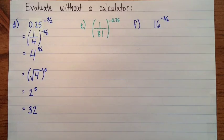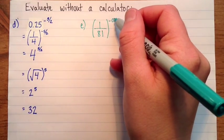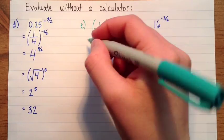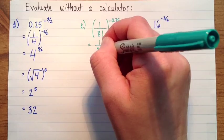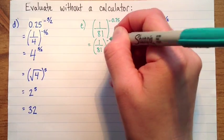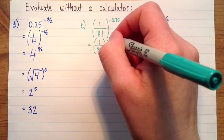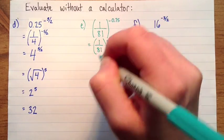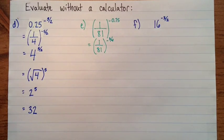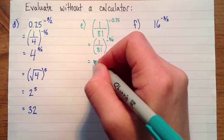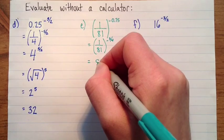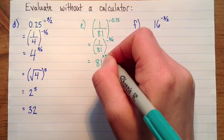And e, we have one over eighty-one to the exponent negative zero point seven five. So we'll change that decimal right to a fraction. So zero point seven five, that's three quarters. And now I'll take, I'll deal with that negative part of the exponent first. So this will be eighty-one to the exponent three-fourths.